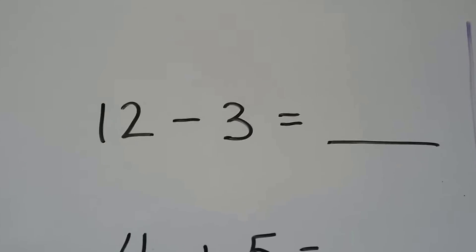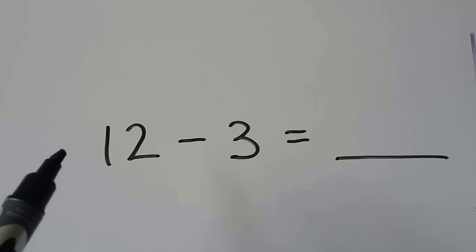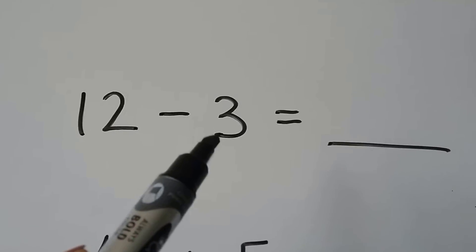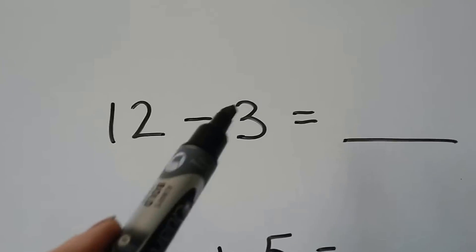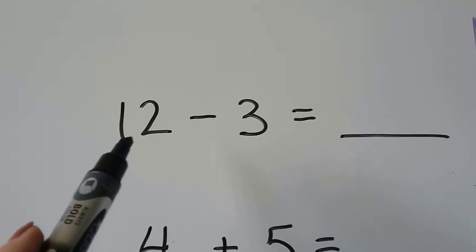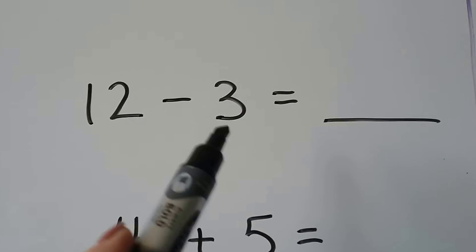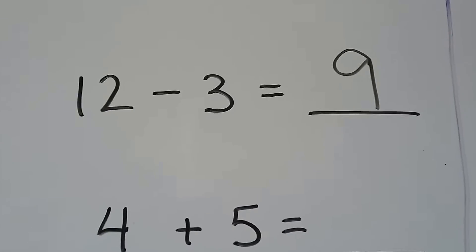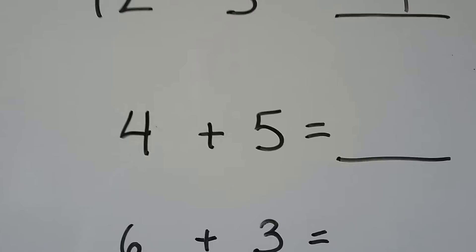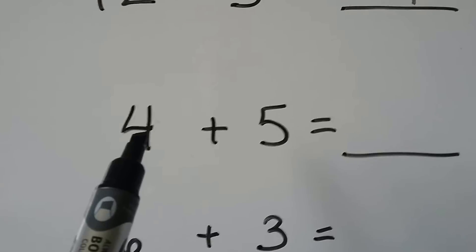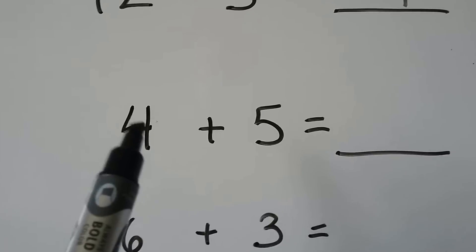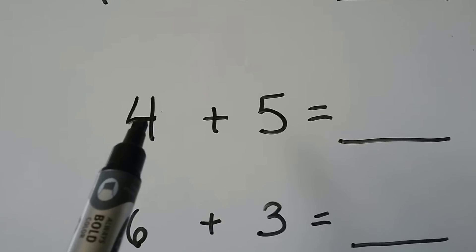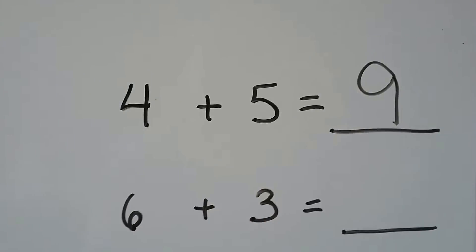12 minus 3 — we can count back 3. Remember, in one of the videos I taught you that when you're counting 3, there are 3 tips on the number 3, so we can use those instead of our fingers. 12, 11, 10, 9. For 4 plus 5, we can use doubles minus 1: 5 plus 5 is 10, minus 1 is 9, because 4 is 1 less than 5. That's doubles minus 1.